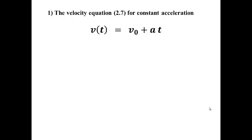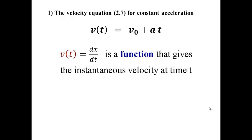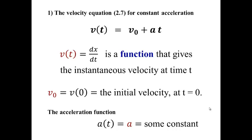The first one is one that you've already seen. It's the equation for constant acceleration with the velocity as a function of time. It's the equation of a straight line. v(t) is, of course, the derivative, the slope, of x(t). It's a function that gives us the instantaneous velocity at any particular time. v₀, as it's pronounced, is v at t equals 0, the initial velocity. The a is the constant value of the acceleration function. It's some number.